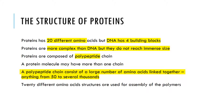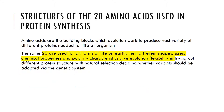20 different amino acid structures are used for the assembly of polymers. Different amino acids can join together to make a different polymer. So, you can have like glycine, cysteine, arginine, and remember it always starts with methionine as well. Amino acids are the building blocks which evolutionarily work to produce a vast variety of different proteins needed for life.